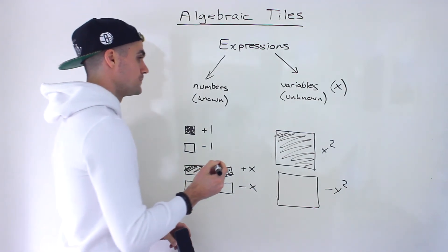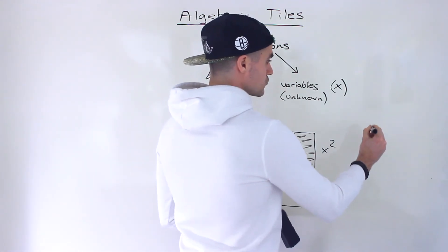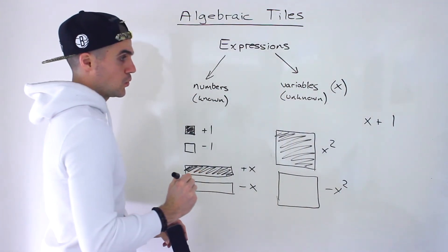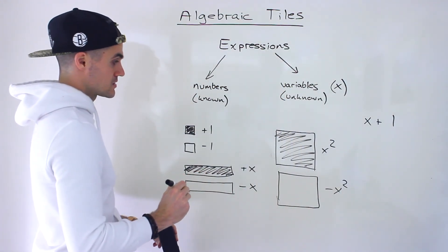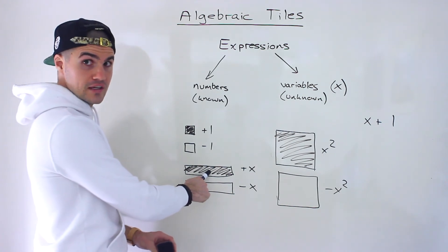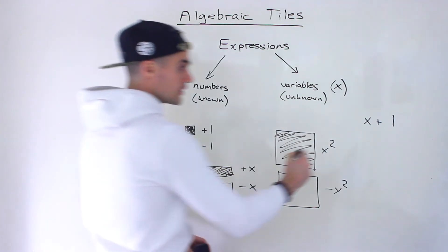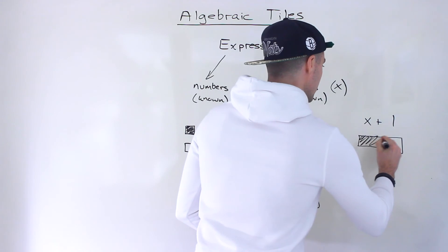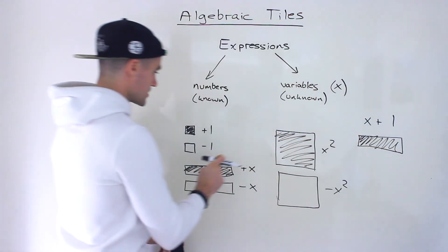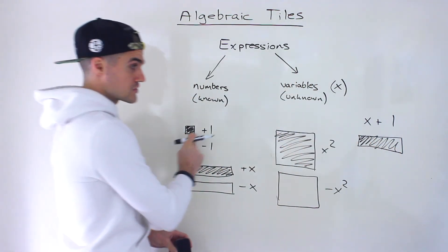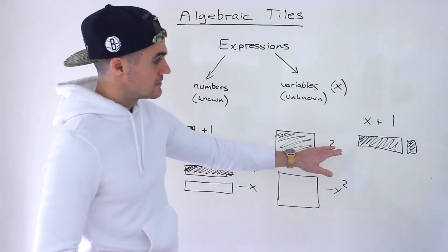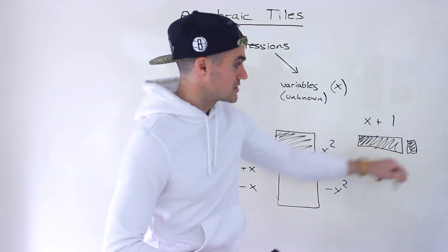So for example, let's say I wanted to represent the expression x + 1 with algebraic tiles. We would put one filled-in rectangle — representing x — and then for the plus one we add one small filled-in square. So if you see that combination, that represents x + 1.